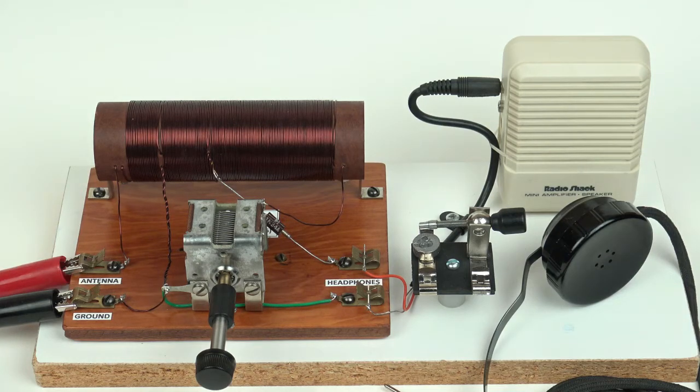On the left side, the connections to the antenna and ground come in to the large coil and capacitor which form a resonant circuit to tune in the stations. Then the 1N34 diode detects the audio modulation and sends it to the earphones.